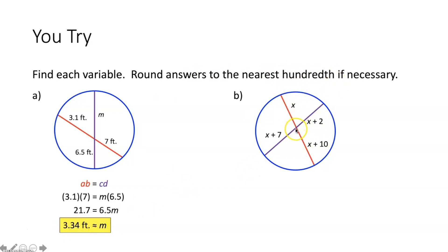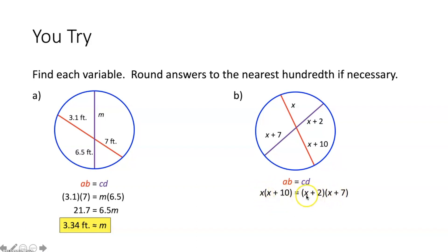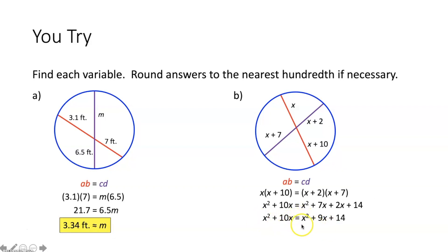Part B — we again have two chords that intersect inside of a circle, separating each chord into two separate chord segments. The segments of chords theorem says those products are equal, so we take X multiplied by X plus 10 and set that equal to X plus 7 times X plus 2. Distributing the X on the left and FOILing the right gives X squared plus 10X on the left and X squared plus 9X plus 14 on the right. Subtracting X squared from both sides, then subtracting 9X from both sides, we get X is equal to 14.